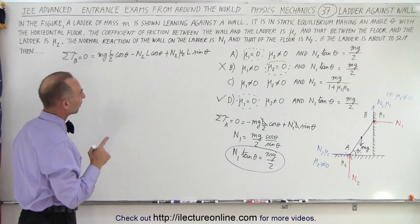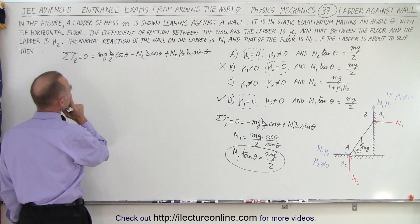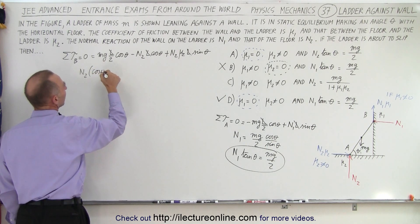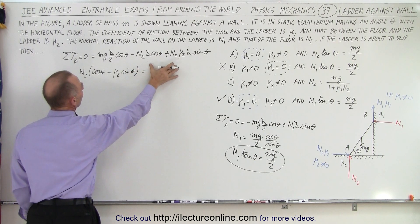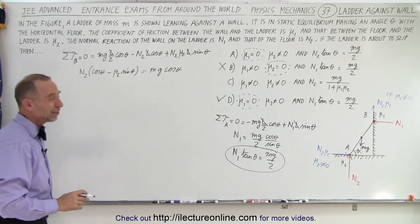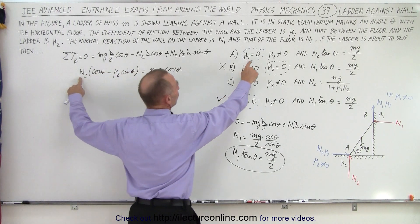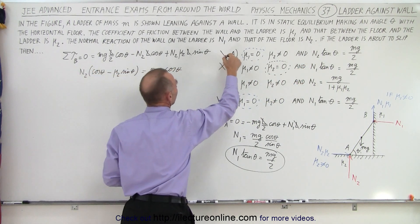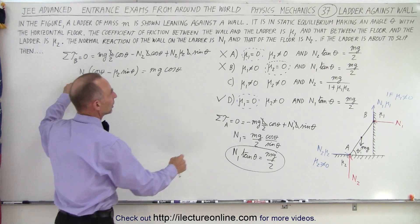Solving that for N2, all the L's cancel. I end up with N2 times (cosine theta minus mu2 times sine theta) equals Mg times cosine theta. Notice I'm not ending up with anything that looks close to answer A's expression, so I can say that A is not a possible answer. We could already see there's no way N2 will equal that expression.